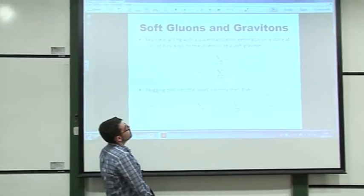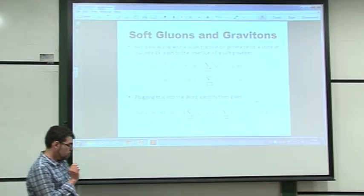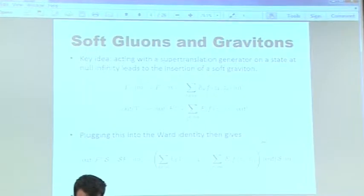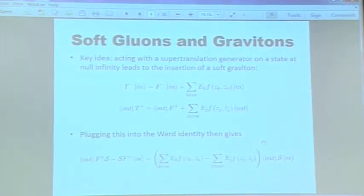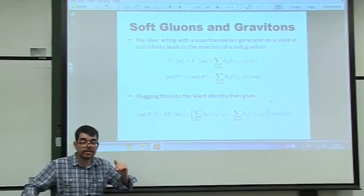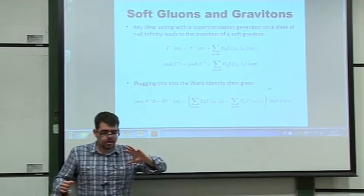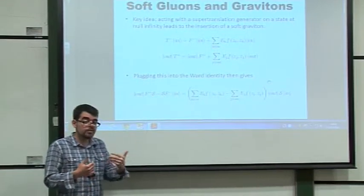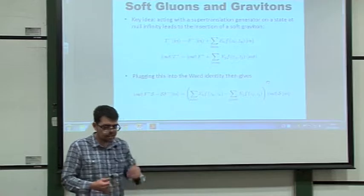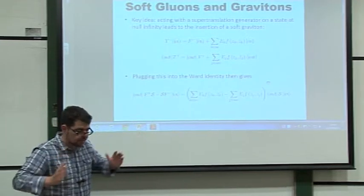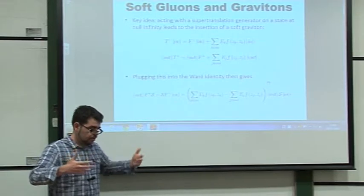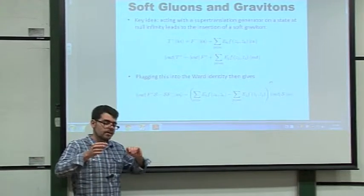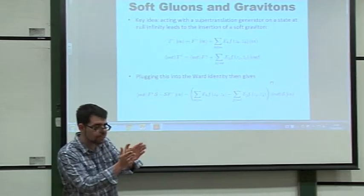The key idea that led Strominger to make this conjecture is that BMS symmetry implies local conservation of energy. But of course, in a given scattering process, energy shouldn't be conserved locally, since a particle could get deflected. What compensates for that deflection and imposes local conservation of energy is the production of soft gravitons. The basic physical picture is that during a scattering process, particles will get deflected, but at the same time there will be production of soft gravitons whose total energy sums to zero, but whose local energy could be positive or negative such that the energy along every given angle is conserved.